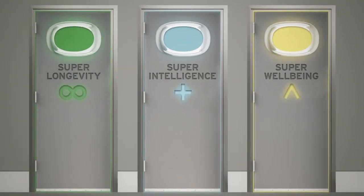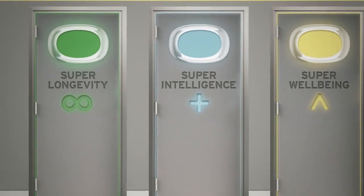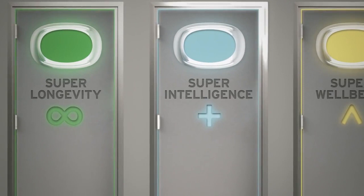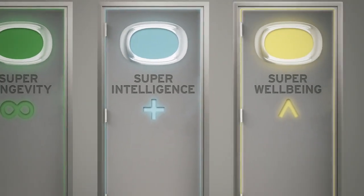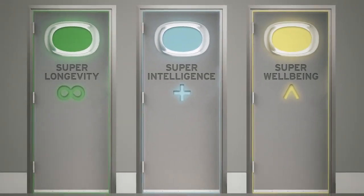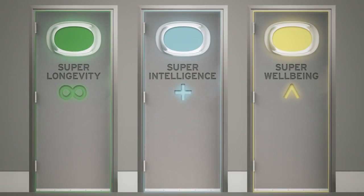These are the three key areas of transhumanist thought, and we've only begun to scratch the surface. The three supers—super longevity, super intelligence, and super wellbeing—might radically change human history if, or when, they are realized.